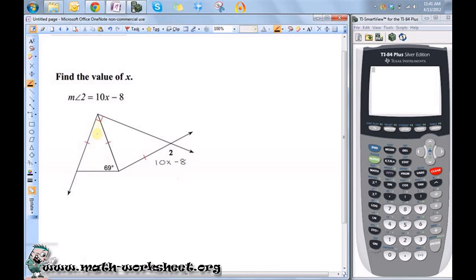Notice that this is an isosceles triangle, which means that the base angles are equal in measure. You can tell it's isosceles because the two sides are equal here. So this is also equal to 69 degrees.